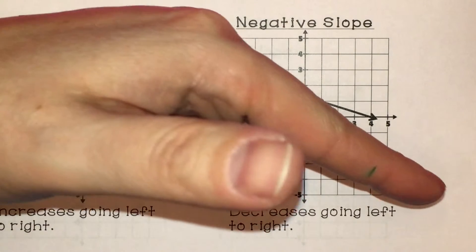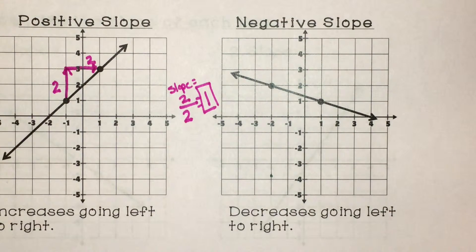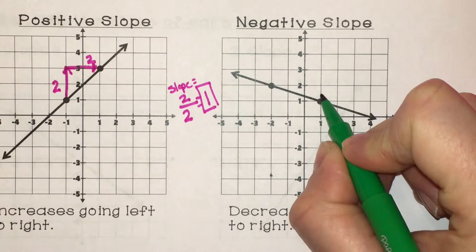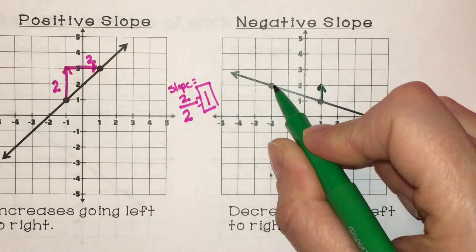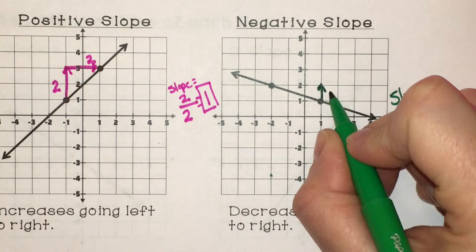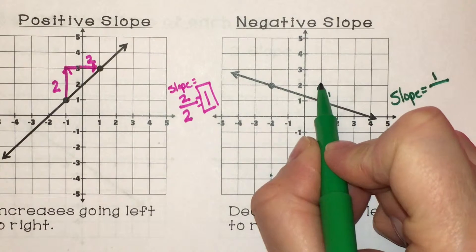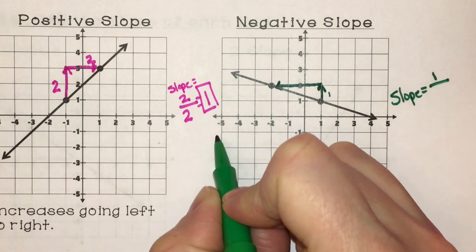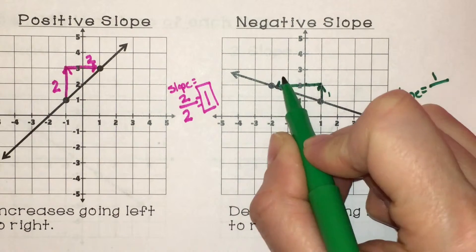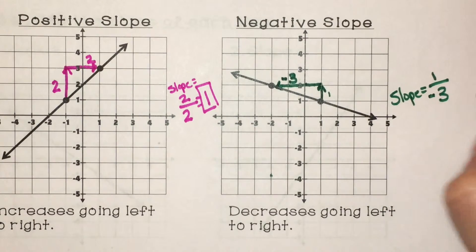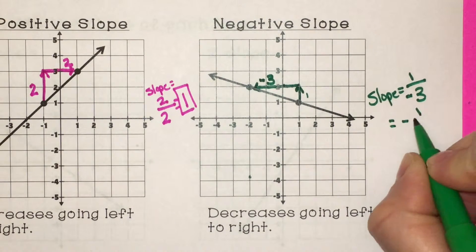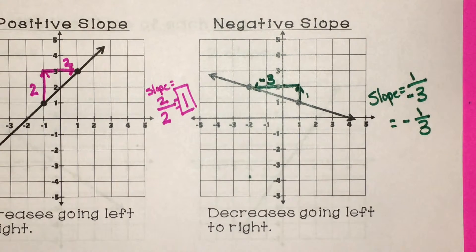Always read the graph — it's decreasing going left to right, so the slope is going to be negative. Start with the bottom point and rise up until we're parallel with our other point: I went straight up from the bottom point, so my rise was positive one. Now my run — I have to run to the left this time. Because I'm going towards negative numbers, my run is negative. I ran one, two, three units, so it's negative three. That gives me one over negative three, and whenever you have a negative in the bottom, pull it out — this is the same thing as negative one-third, because a positive divided by a negative gives you a negative. So my slope is negative one-third.